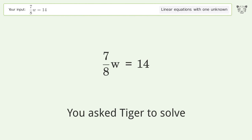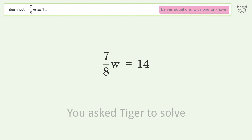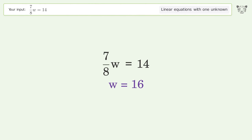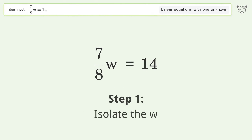You asked Tiger to solve this — it deals with linear equations with one unknown. The final result is w equals 16. Let's solve it step by step and isolate the w.